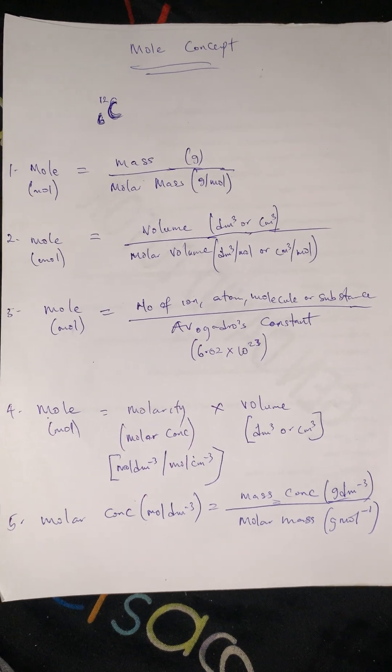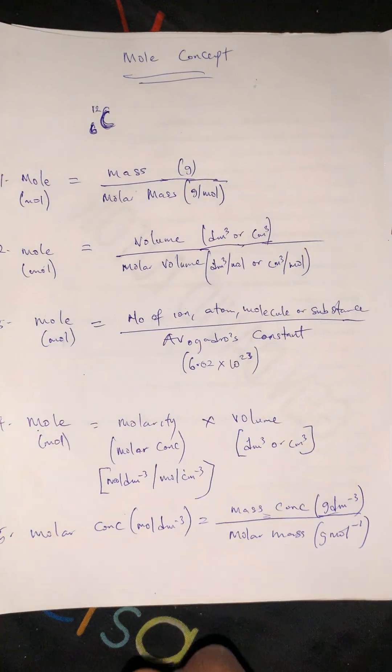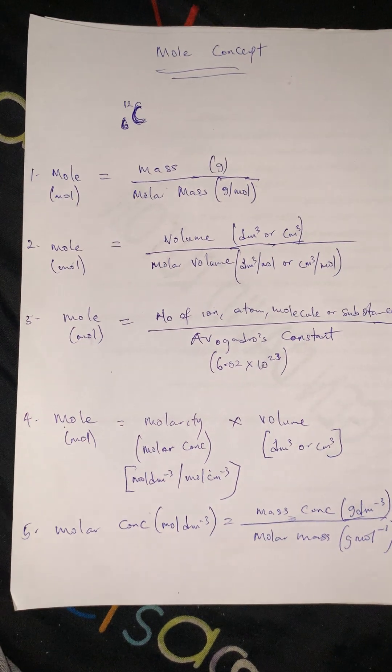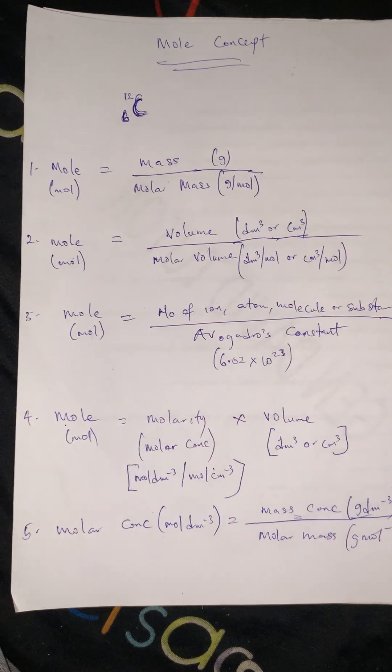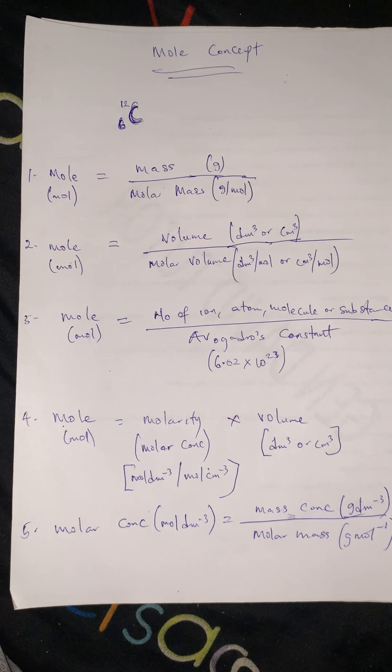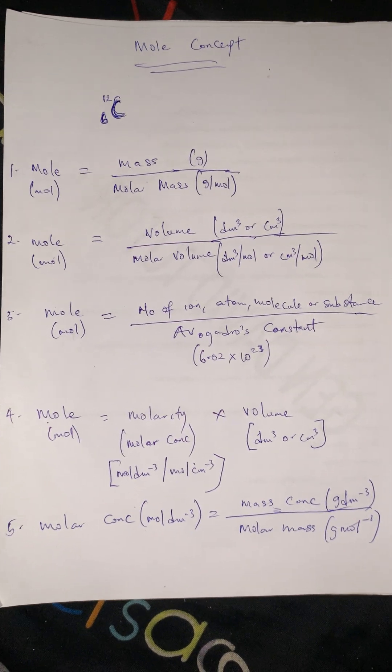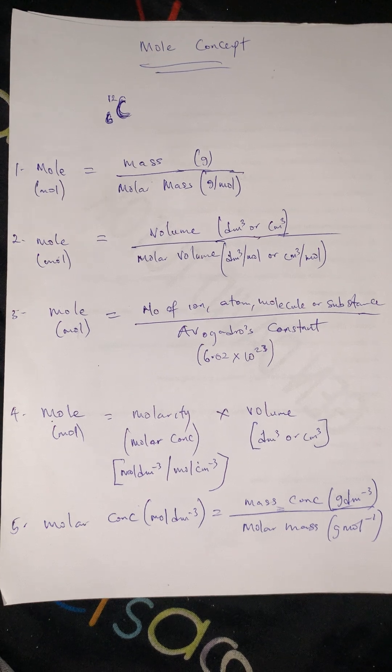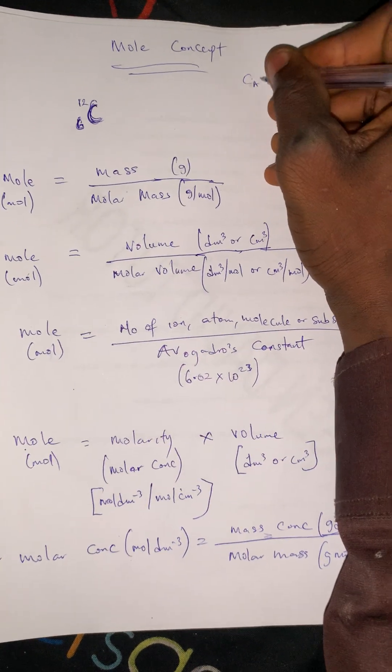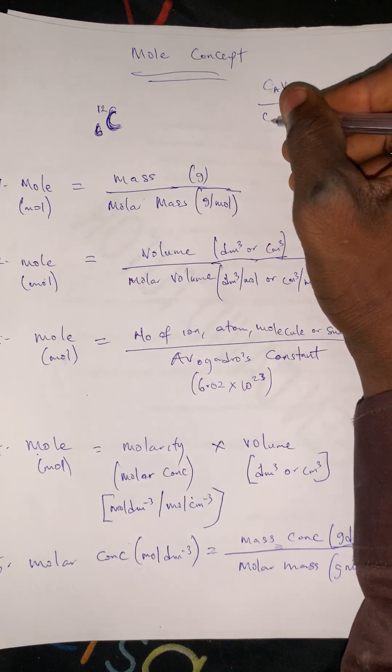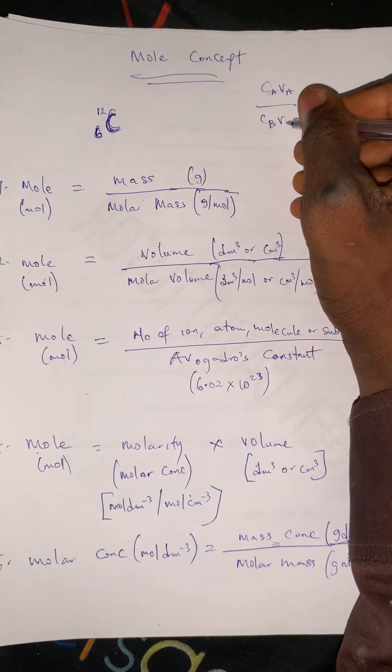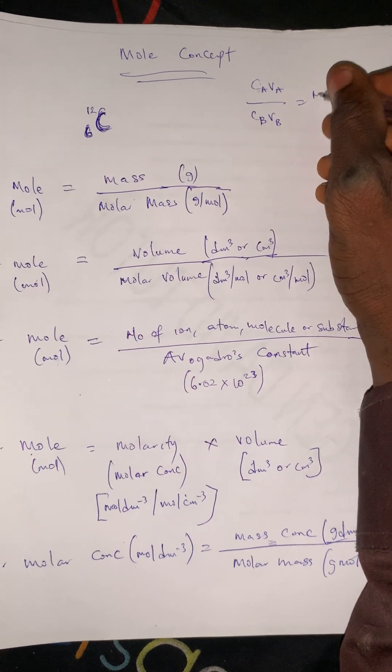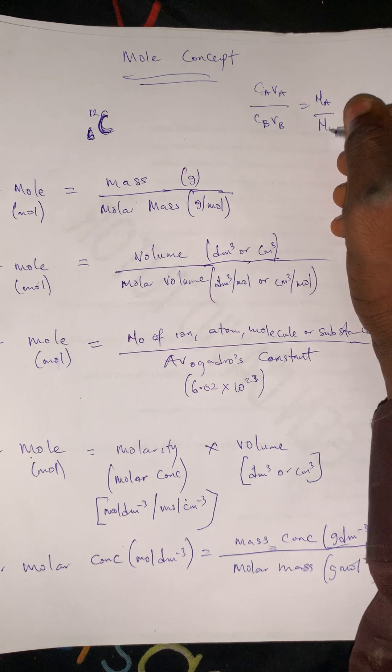Number 6: we have CA times VA over CB times VB equals NA over NB.